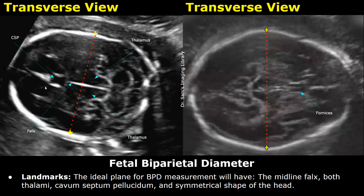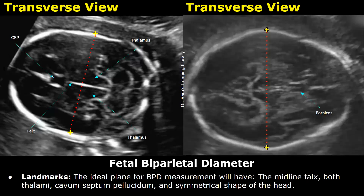For measuring the BPD, an ideal landmark is to take the measurement when you see the midline falx — this hyperechoic midline falx — with both thalami on either side of the falx, and the cavum septum pellucidum, this rectangular anechoic structure, and a symmetrical shape of the head.